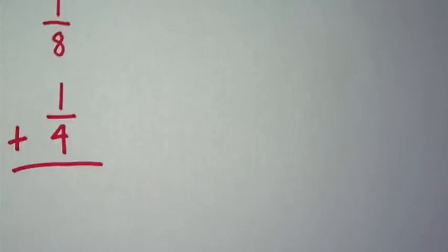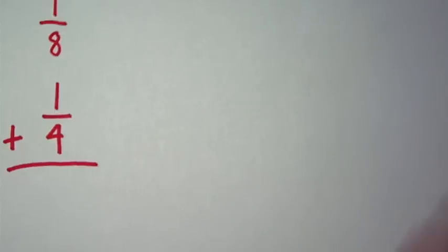Today we're going to learn about adding and subtracting fractions with unlike denominators. Now the first thing we have to do is find the least common denominator. In this case I look at the denominator 8 and denominator 4.